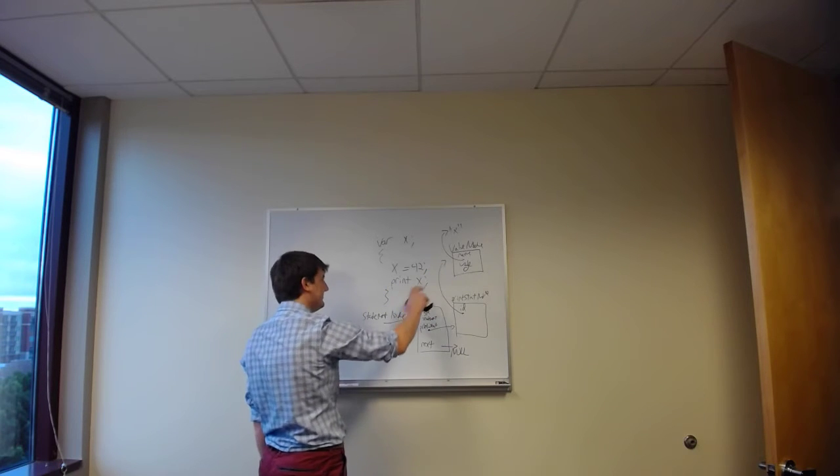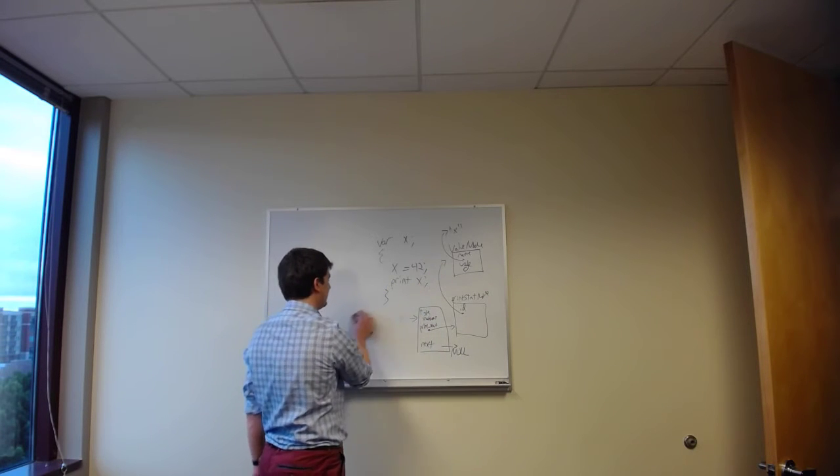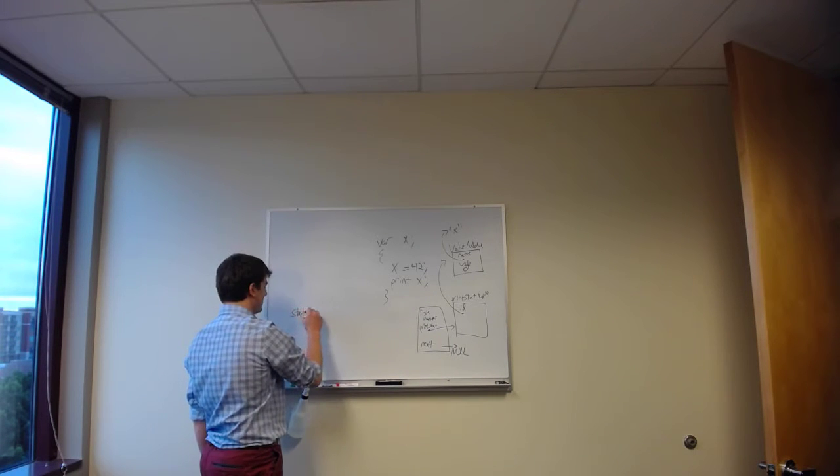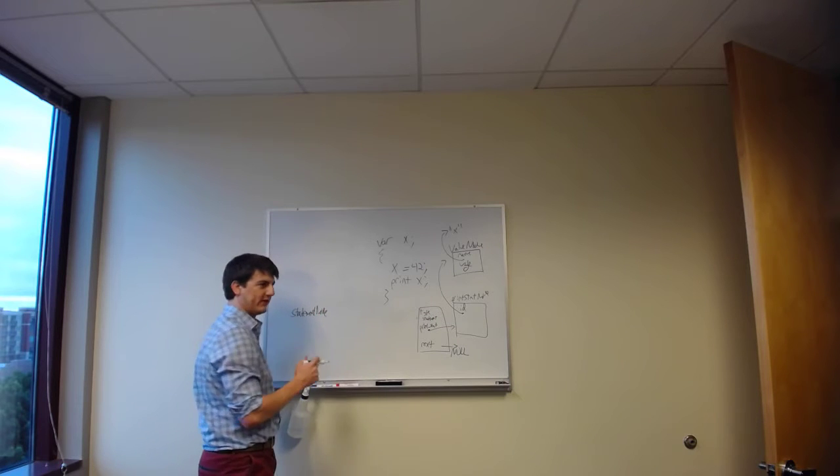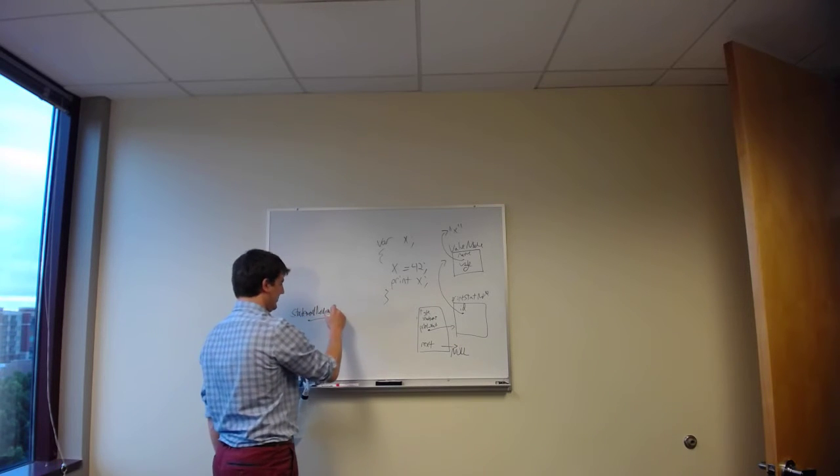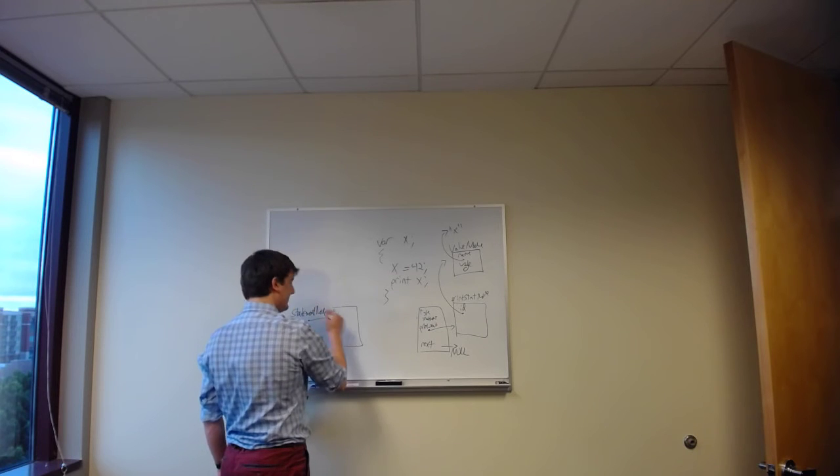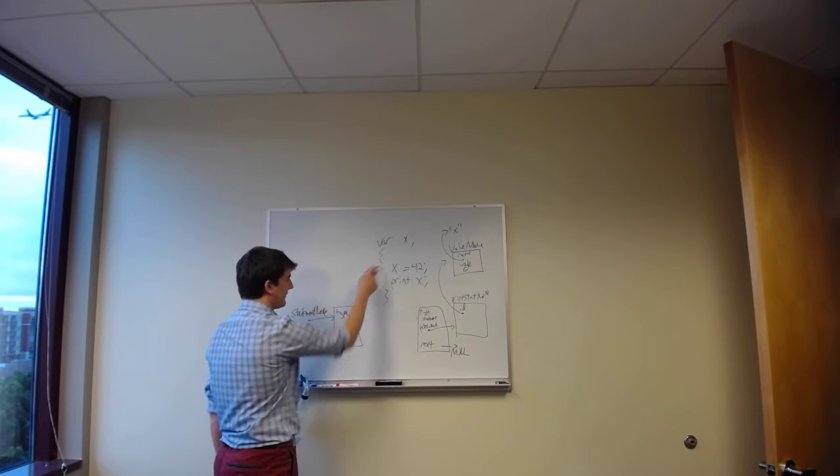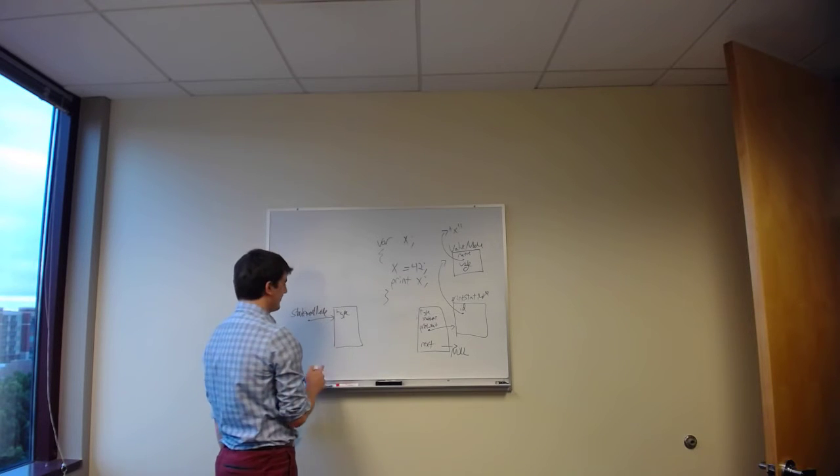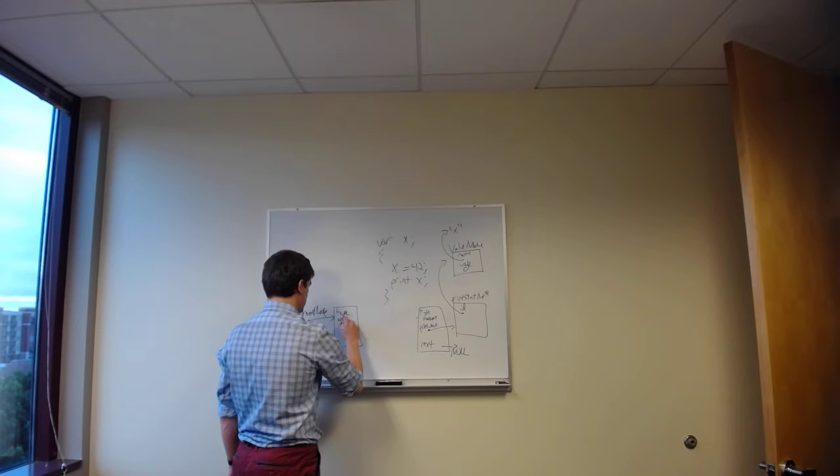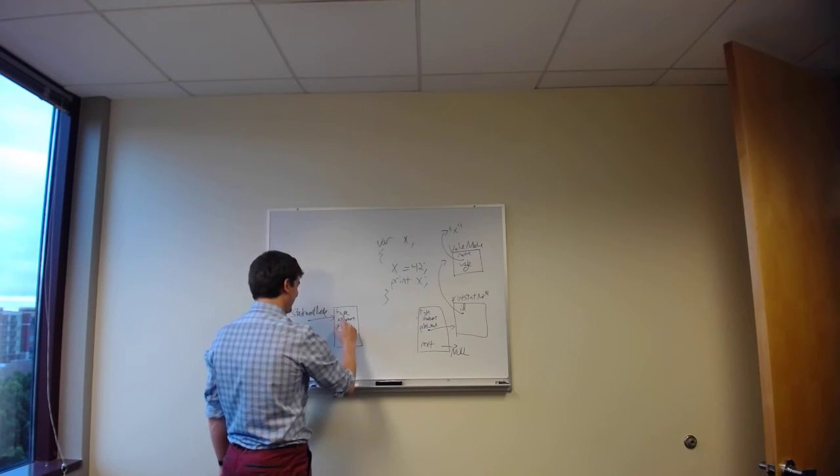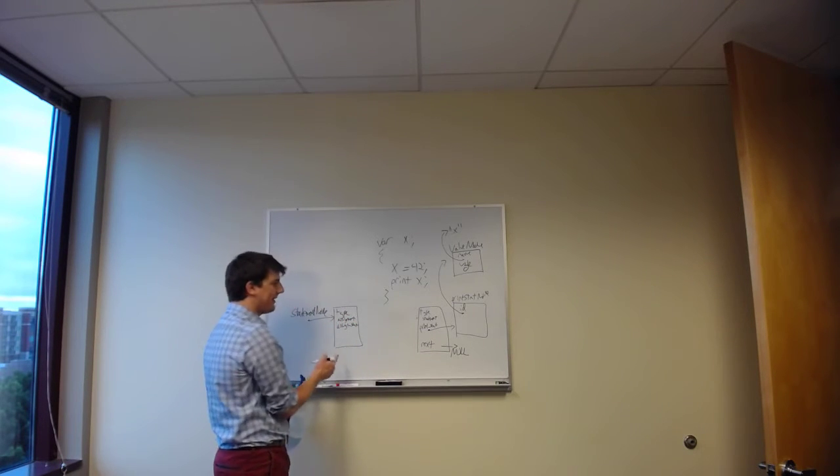No, everything should stay in place, but let's step back and start from here. We have the statement node that we return, the pointer that we return. This is going to point to a statement node structure, and the type of that is going to be what? For the first line, it's going to be an assignment statement. And what about next? What is next going to point to? It's going to point to the next one. Perfect.